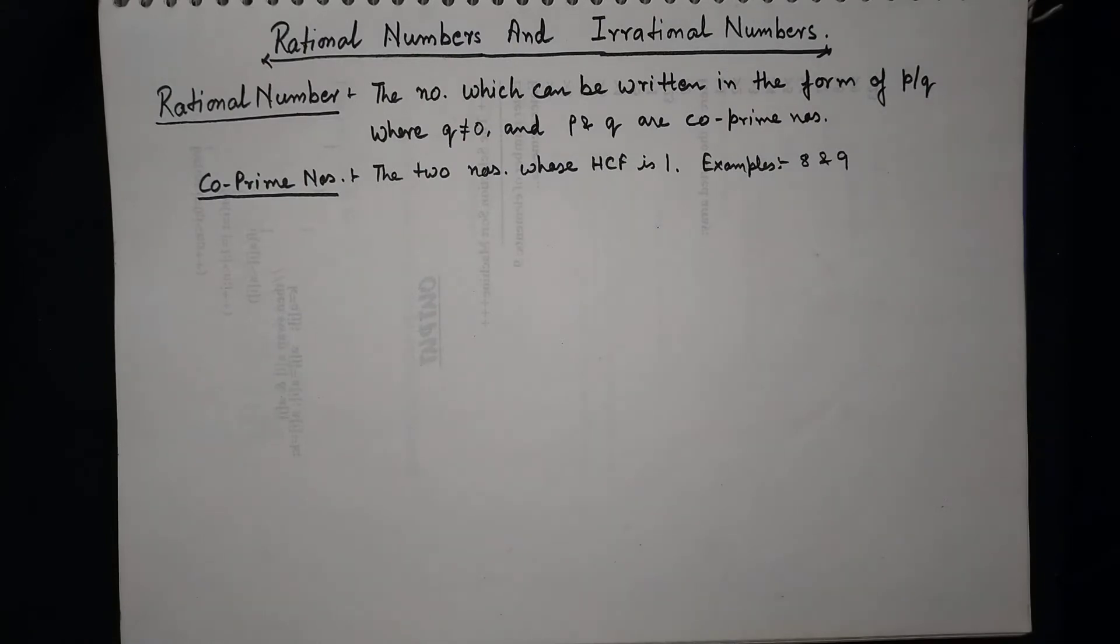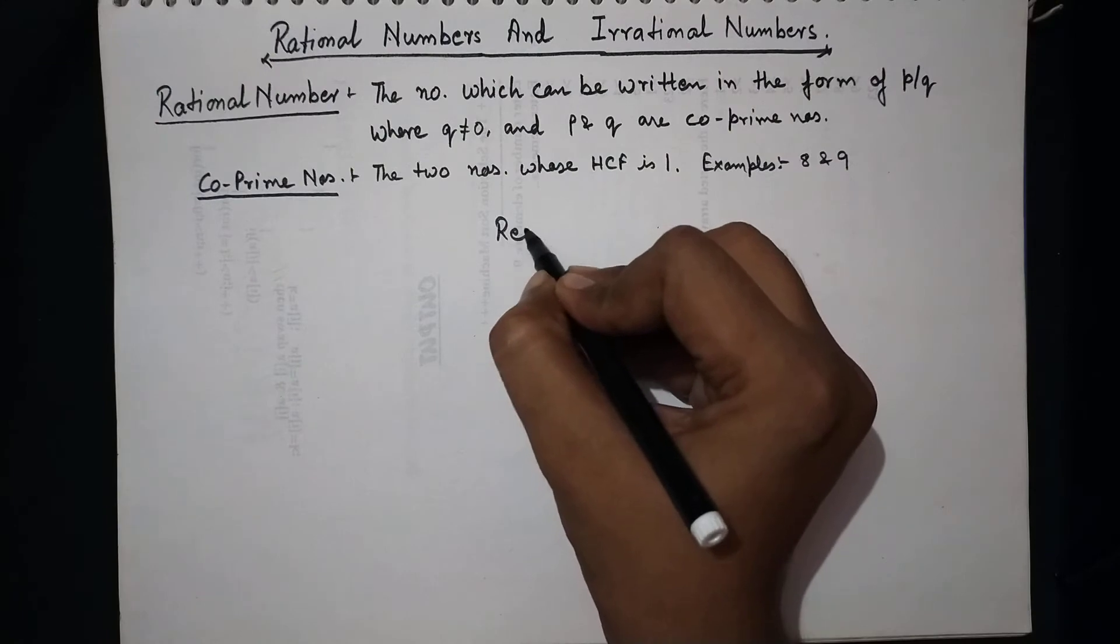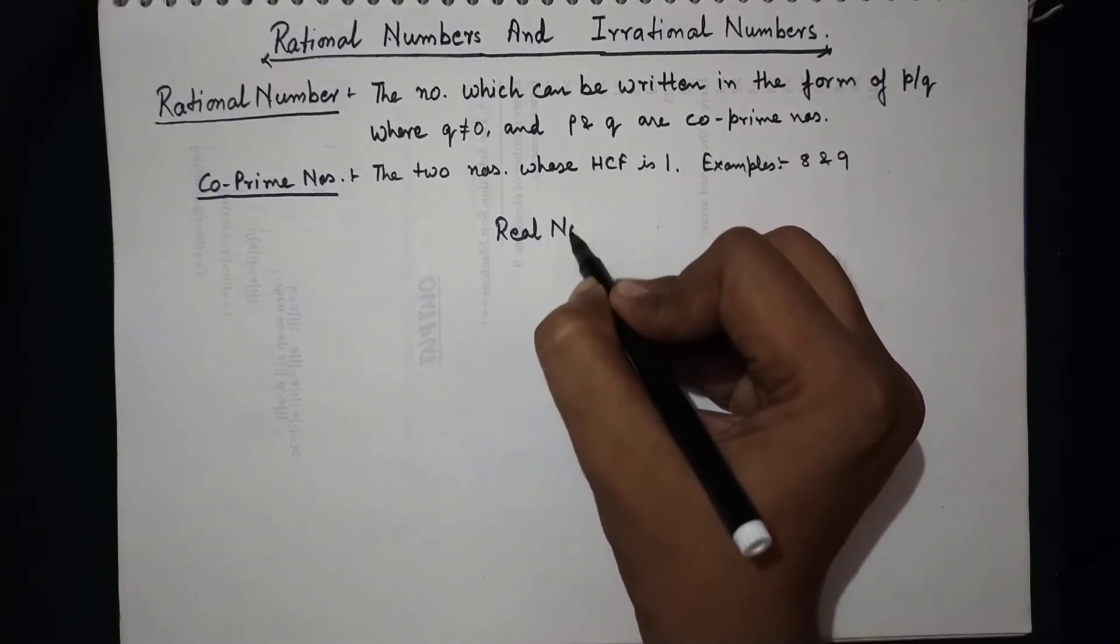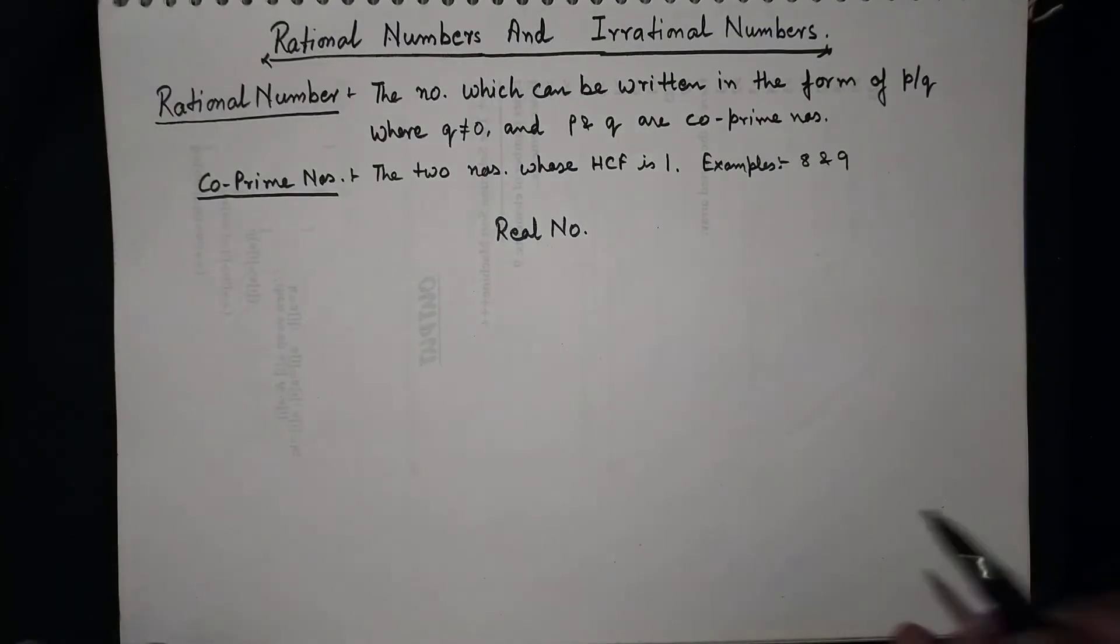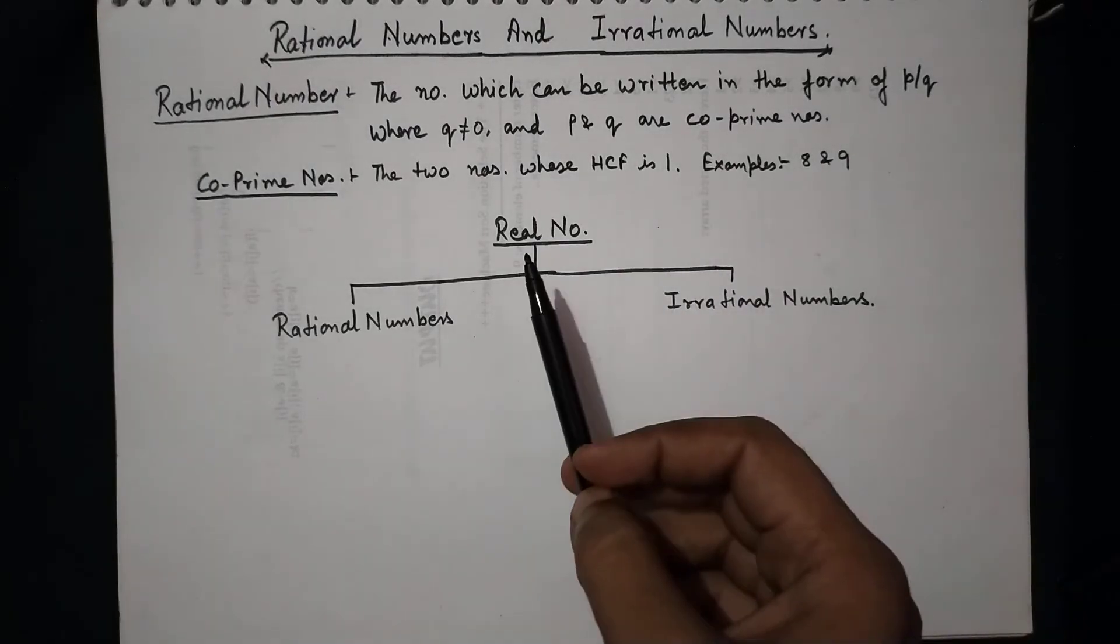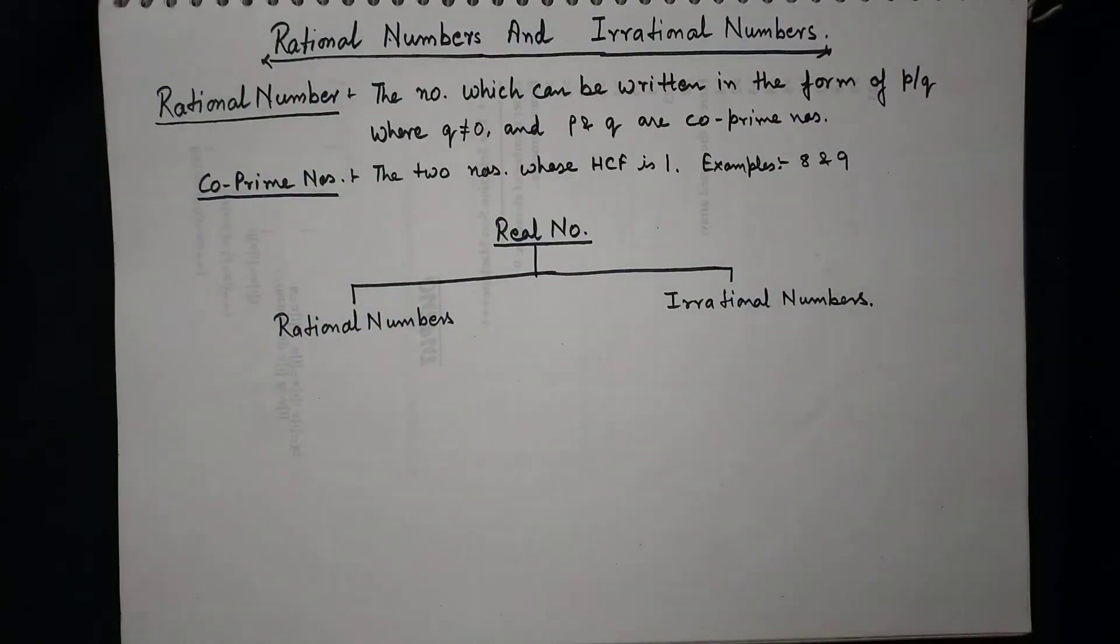Then we go for a real number. Real number is a union of both rational and irrational numbers. We can divide the real number into two parts, that is rational number and irrational numbers. So the real number consists of the two types of numbers: rational and irrational numbers.